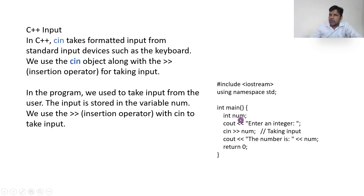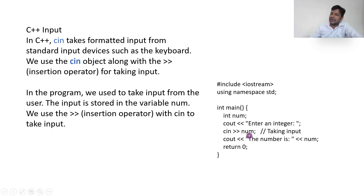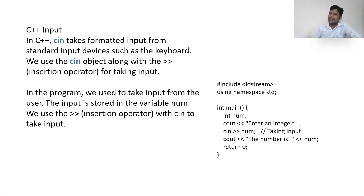Instead of writing num = 5 directly, I use cin. What cin does is: if I hardcode num = 5, the result is always the same — it is static. Instead, to make the value dynamic, I use cin. The cursor will wait on the output screen for a value. When you enter a value, for example 10, it will be assigned to num. So cin is assigning a dynamic value to a variable.